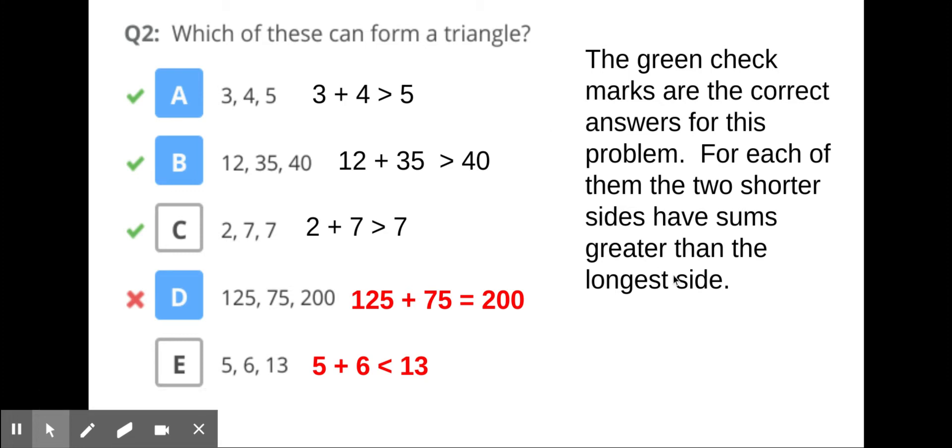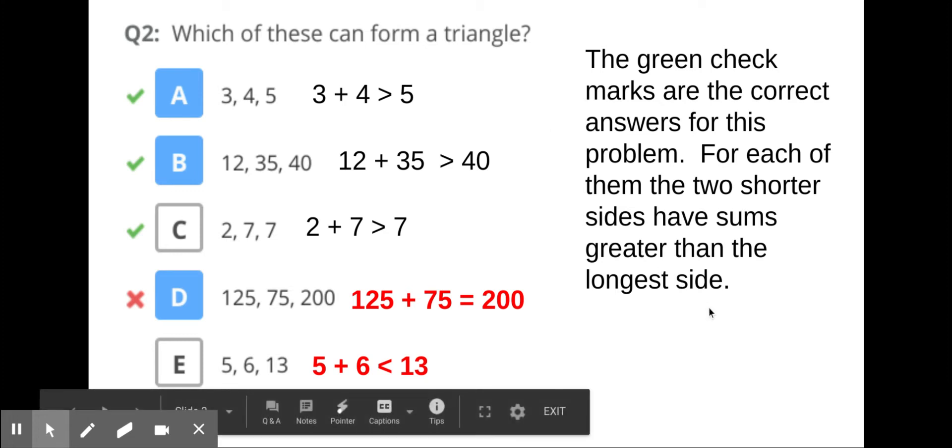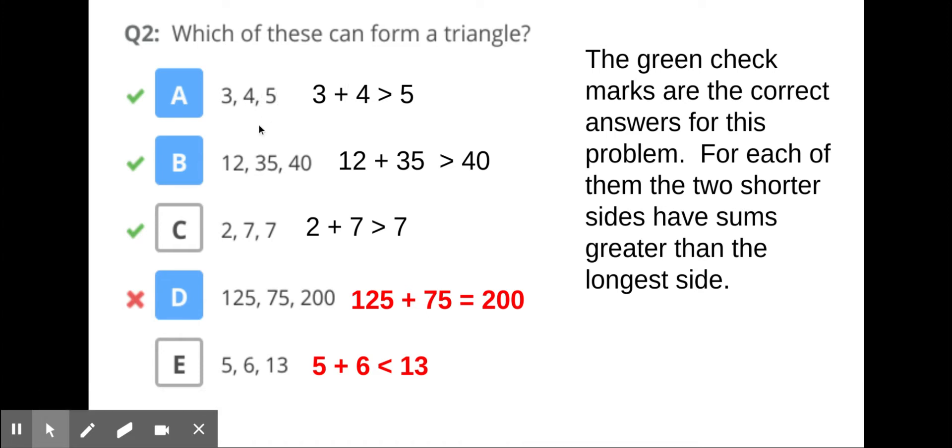Looking at Question 2, we see that the green check marks are the correct answers. We see 3 plus 4 is 7, that's more than 5, so that one will work. 12 and 35 adds up to more than 40.